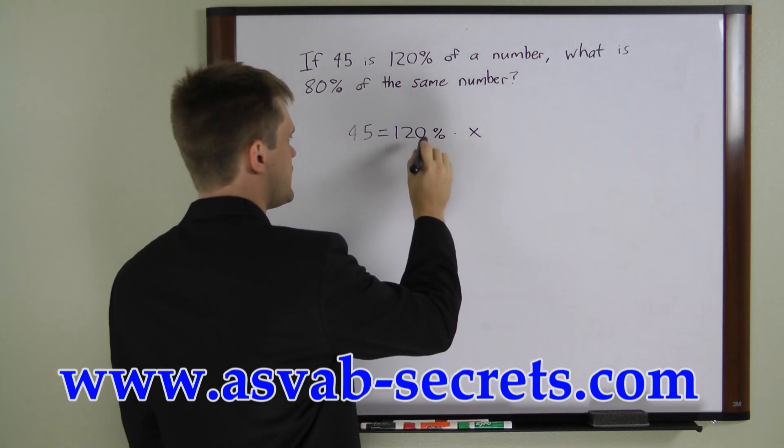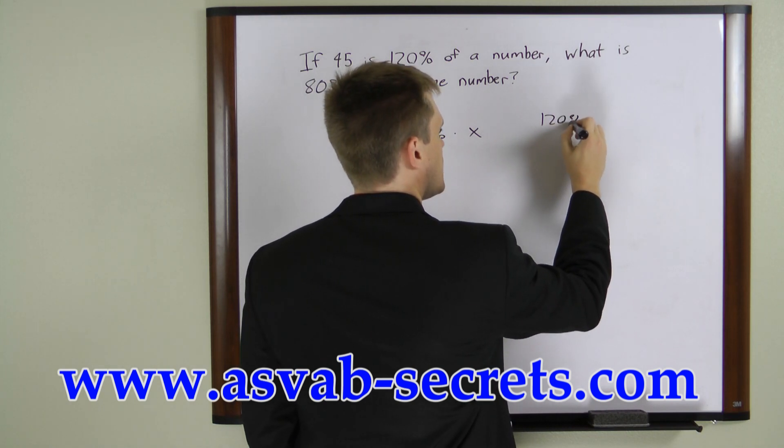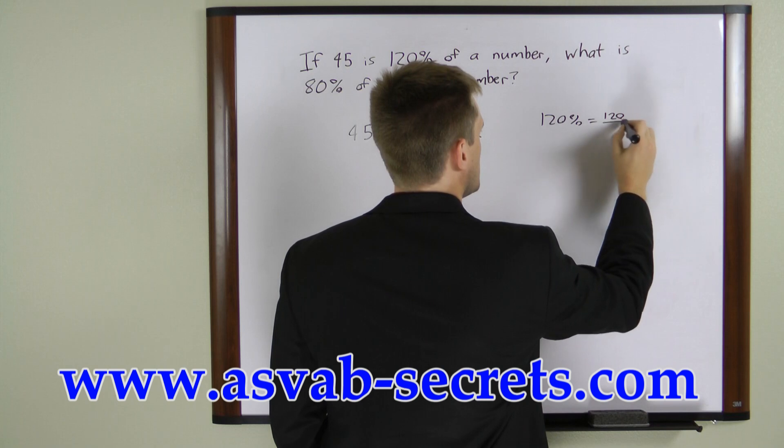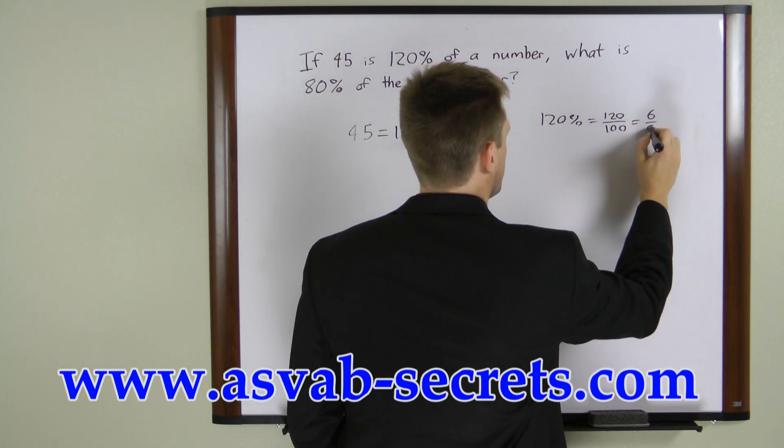Now to solve this, we want to convert 120% to a fraction. 120% is 120 over 100, which is the same as 6 over 5.